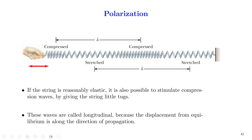To demonstrate the second type of wave motion, we shall take a spring and attach it at one end. At the free end, we shall give a vibration along the horizontal direction and in this case we can see that the wave propagates along the string as compression and elongation. So this region is characterized by a compression and this region is characterized by elongation. And this kind of wave motion is known as a longitudinal wave motion because the displacement from equilibrium is along the direction of the propagation.